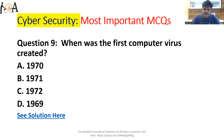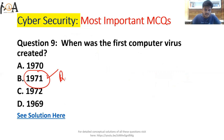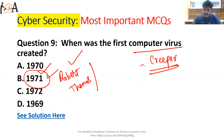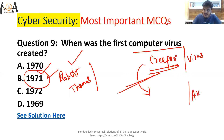Question number nine: when was the first computer virus created? The first computer virus was created in 1971 by Robert Thomas, and the name of that virus was Creeper. Creeper was created as an experimental program. Later, to resolve the Creeper virus, an antivirus called Reaper was created to eliminate the problems caused by Creeper.